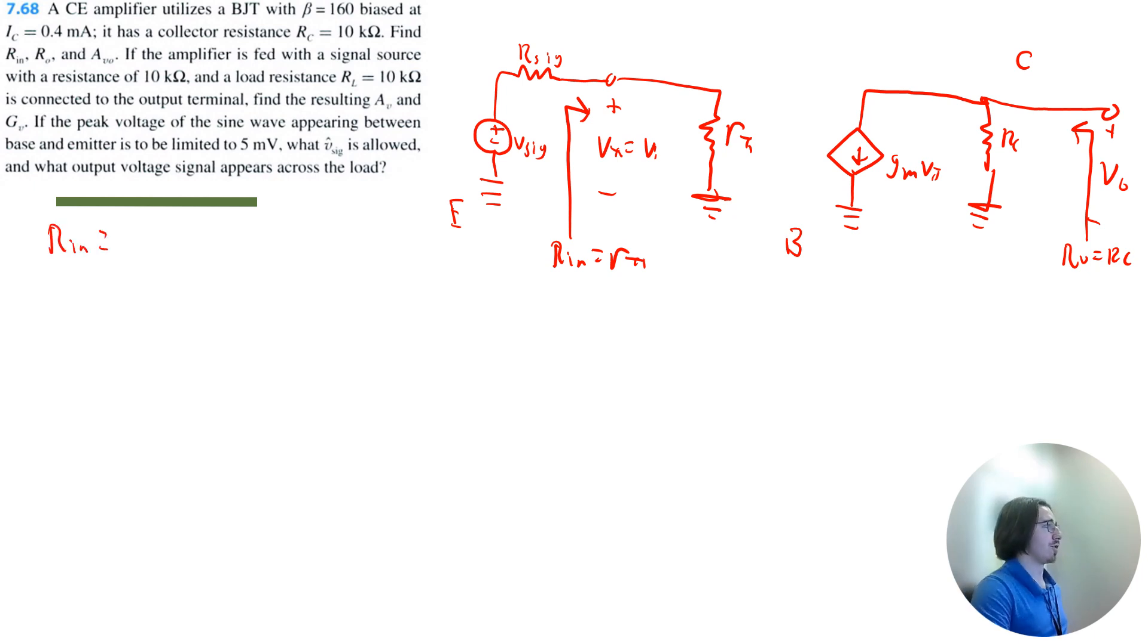Let's start by finding Rin. So we know that's equal to rπ. And there's a formula for rπ: it's beta divided by gm. So we need to figure out what gm is. So gm is equal to the collector current divided by thermal voltage.